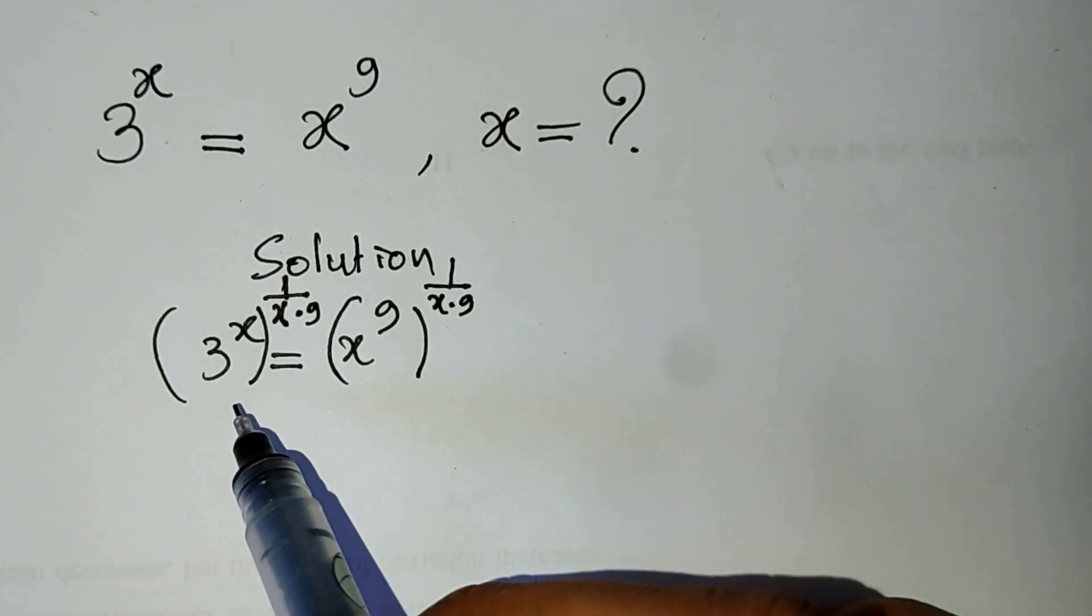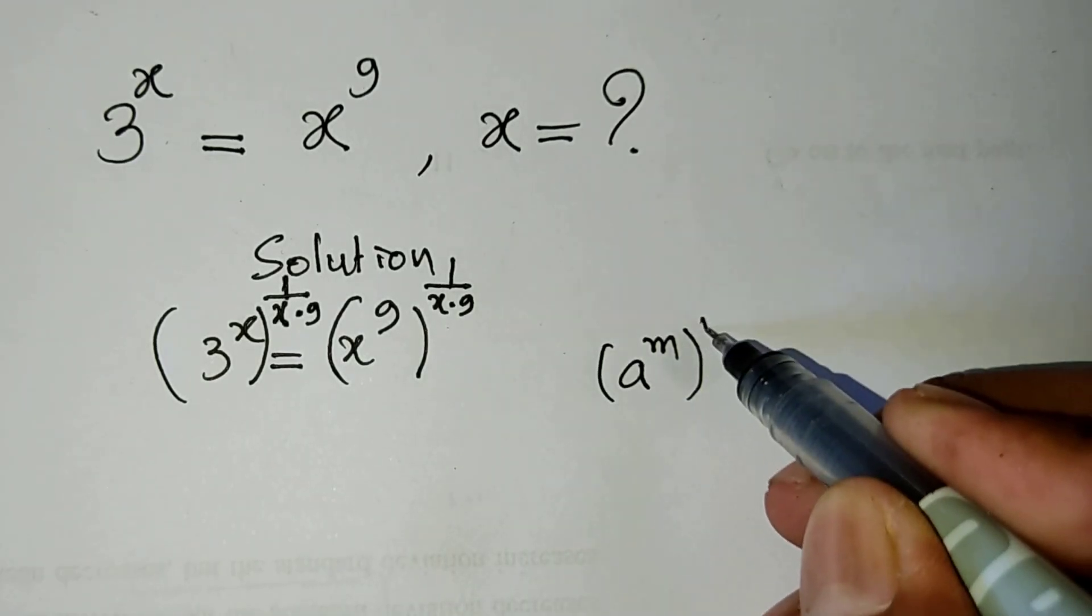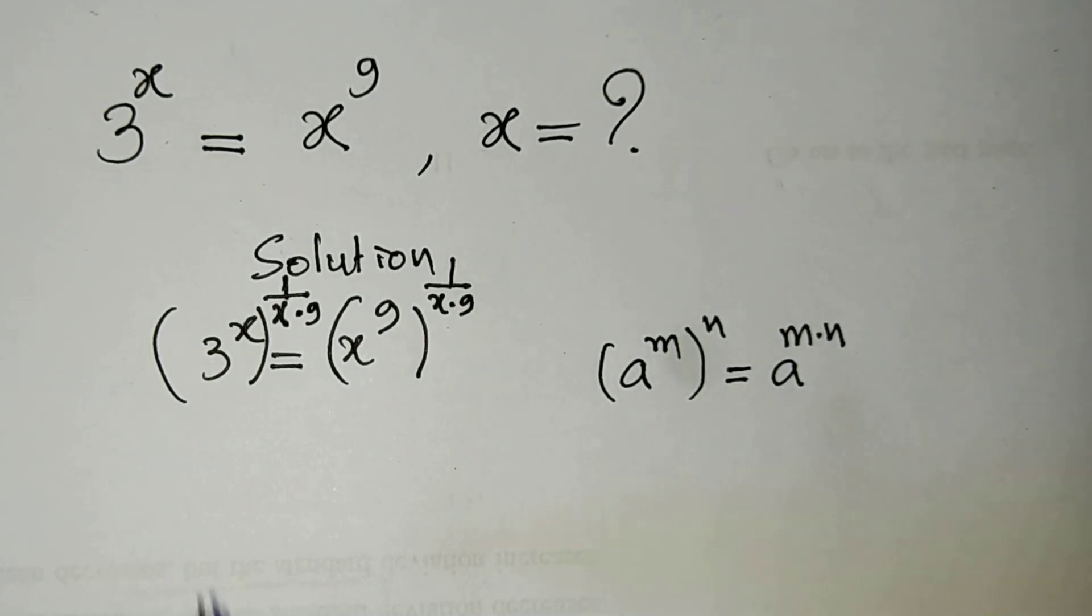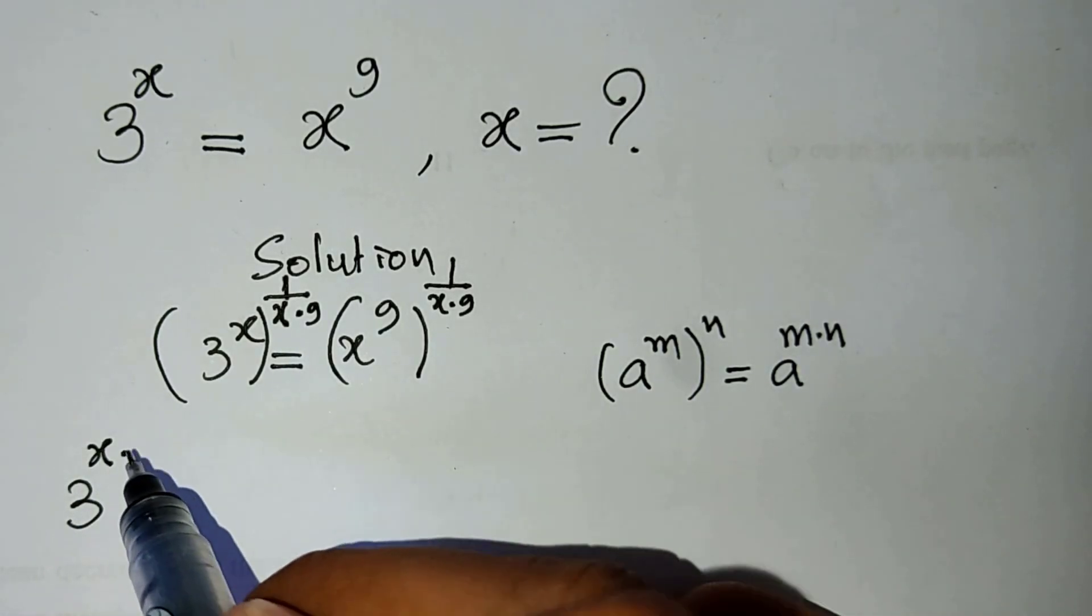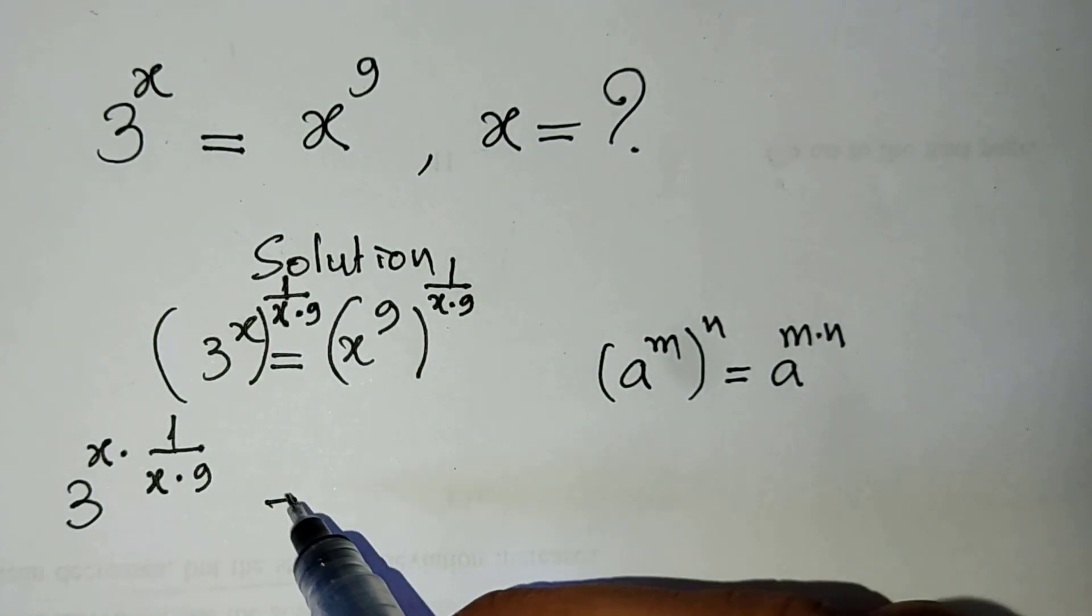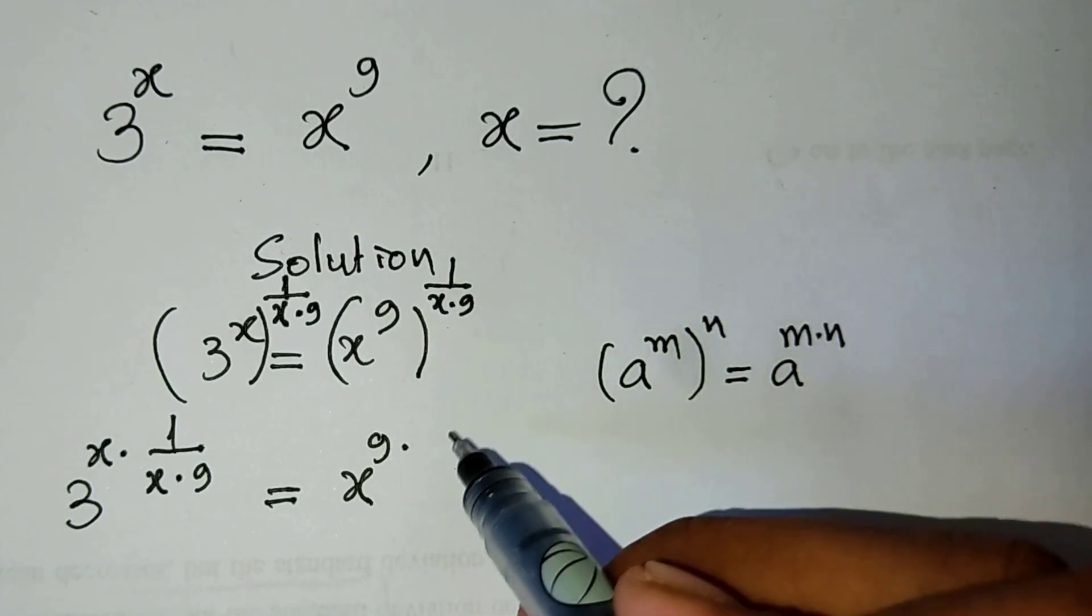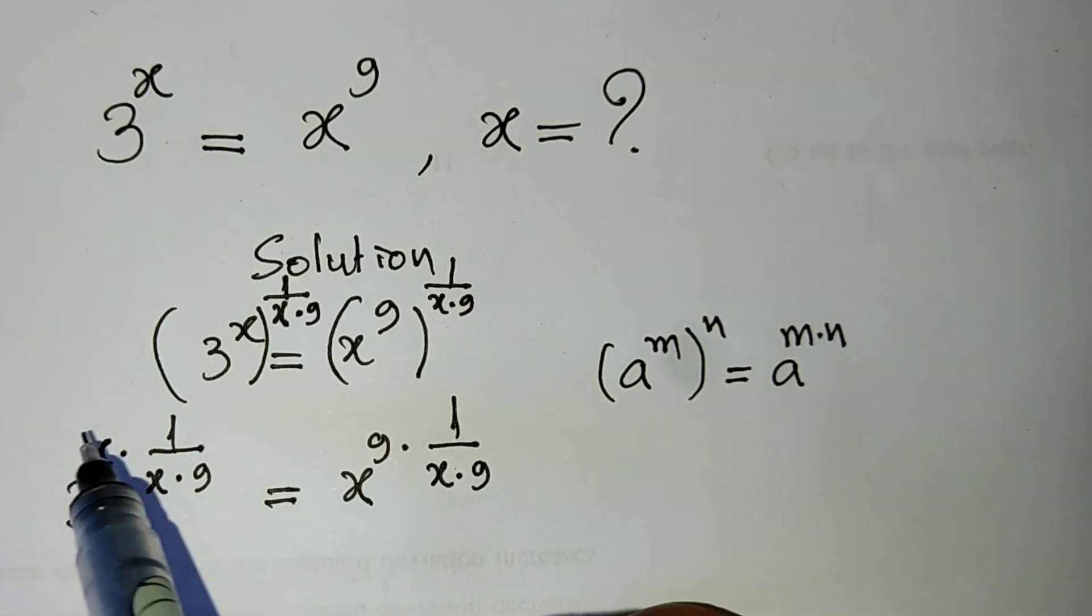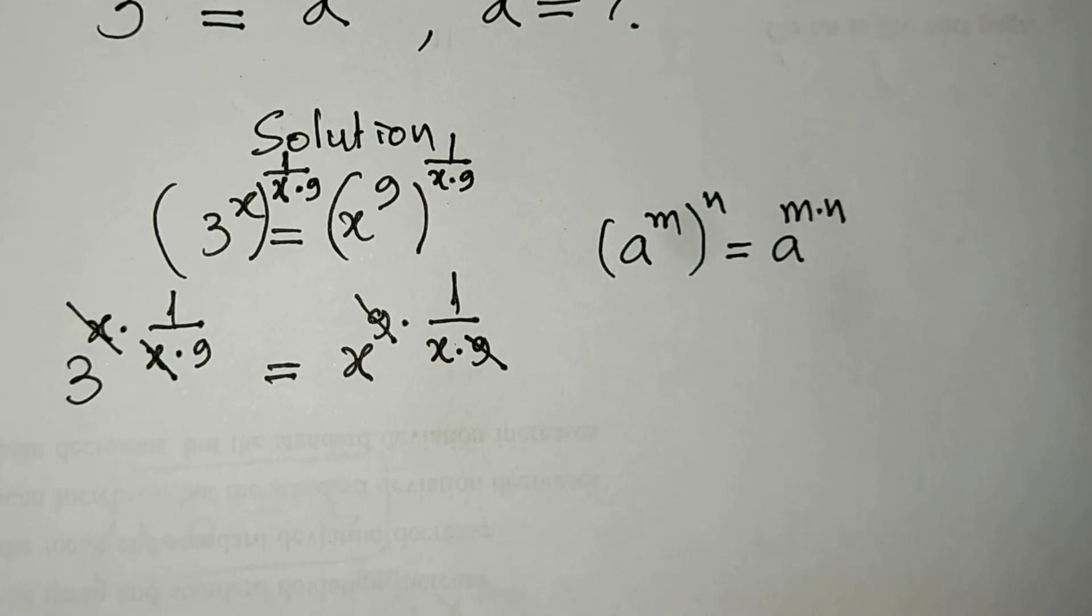And we use a formula that is a power m or power n is equal to a power m times n. So here is, we get 3 power x times 1 divided by x times 9. And we simplify x, x. And here is 9, 9. We get 3 power 1 divided by 9 equal to x power 1 divided by x.